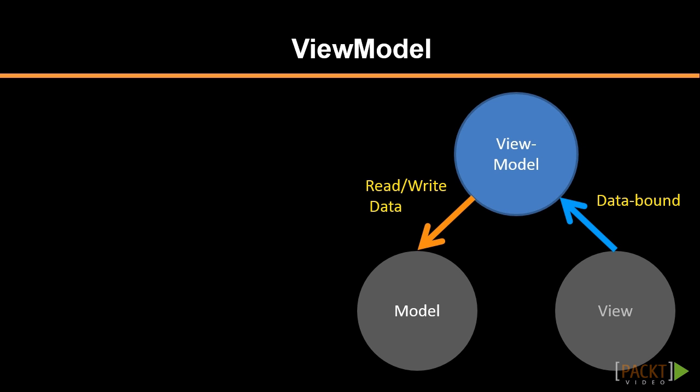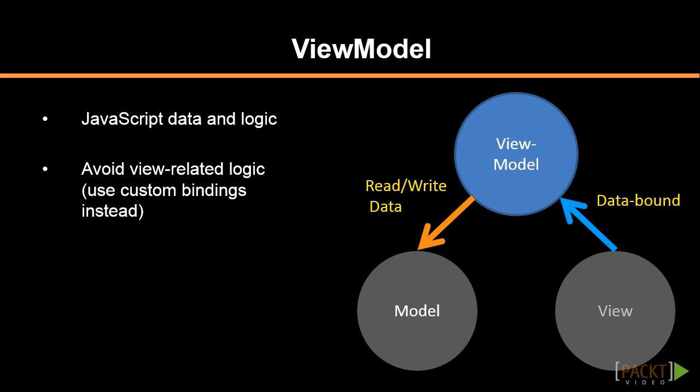The view model is a model specifically crafted for the view. This is where the bulk of the JavaScript code will reside in a Knockout application. While the view model is constructed to support the view and provide data in a way that is easy for the view to consume, it should not directly reference the view. Code that ties the view to the view model should be created as a custom binding.